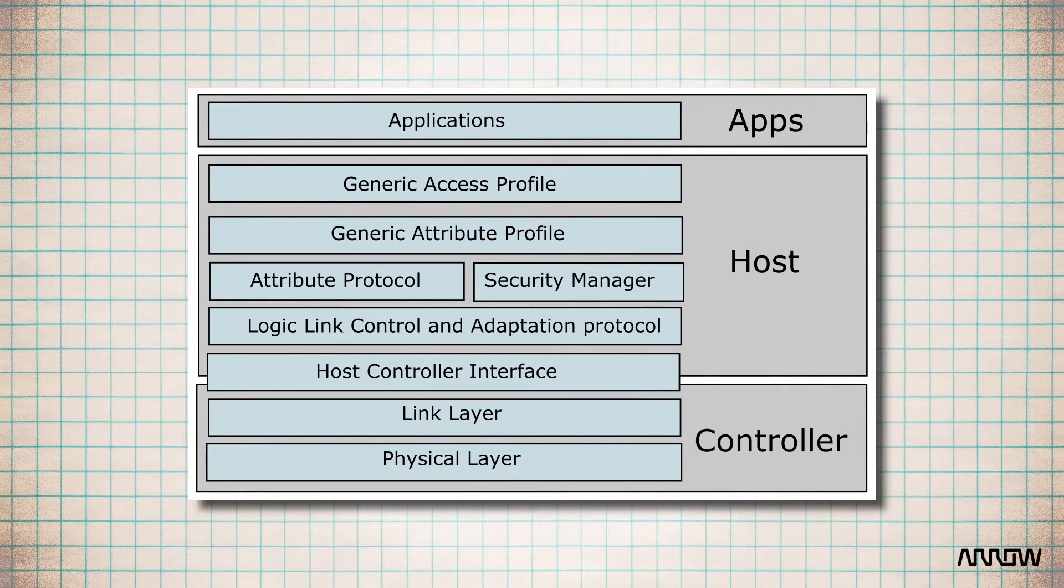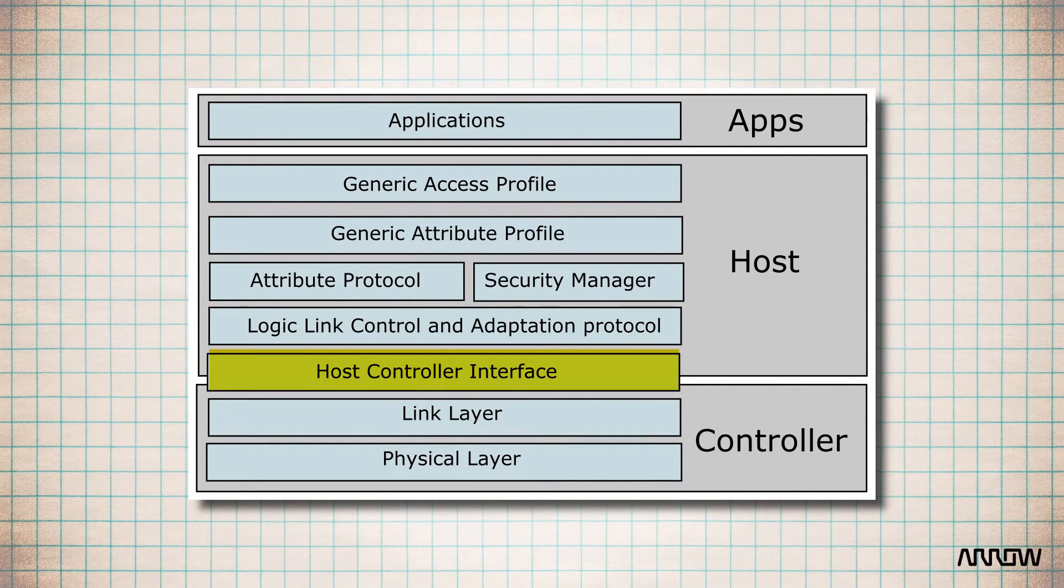When the Bluetooth standard was first designed, the host and the controller could be two different chips. The HCI stands for Host Controller Interface and it was designed to be the interface between the host and the controller. Hence a physical interface is integrated in the specs, but nowadays is not practically used as most modern BLE solutions integrate the host and controller in a single package or even a single chip.